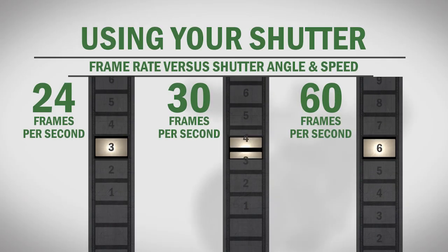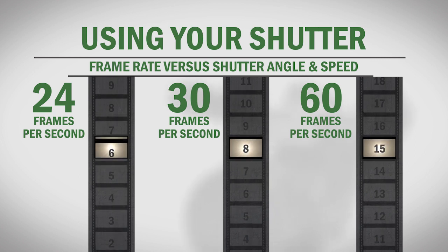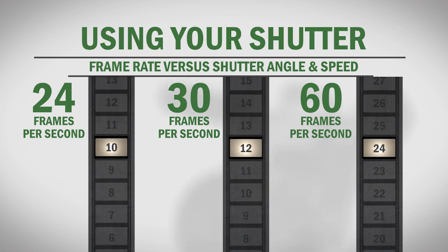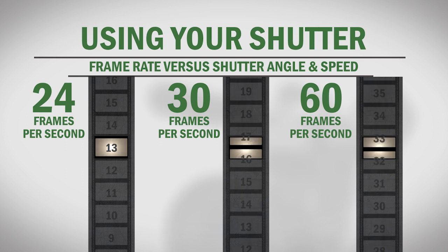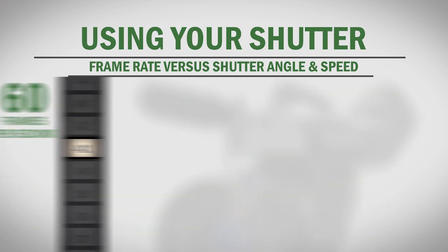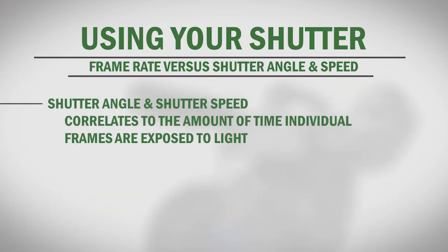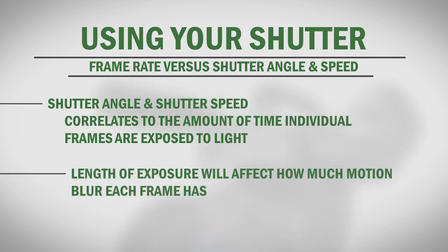Before we dive into your camera's shutter, it's important to understand the difference between the frame rate you shoot at and the shutter angle or setting you use. Frame rates such as 24p, 30p, and 60p refer to the number of still images that are recorded each second to create motion. Shutter angle or shutter speed correlates to the amount of time that each of those single frames is exposed to light. The amount of time each frame is exposed will affect how much blur motion will have in your shots.